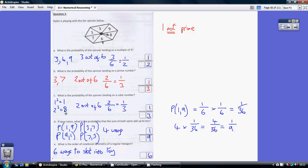So 1 and 8 are the two we want. 1 and 8, so that's 2 out of 6 again, which is a third again.